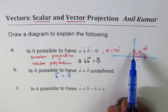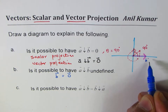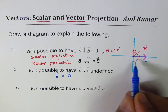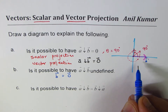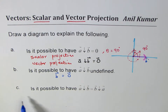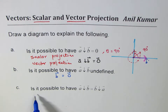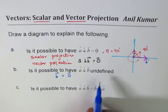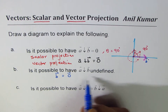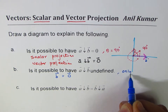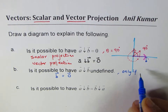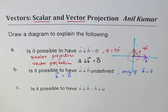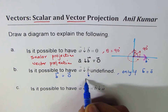Normally when we are projecting a vector onto another vector, we assume the other vector is a non-zero vector. So to answer Part B: the projection of a on b is undefined only if vector b is the zero vector.